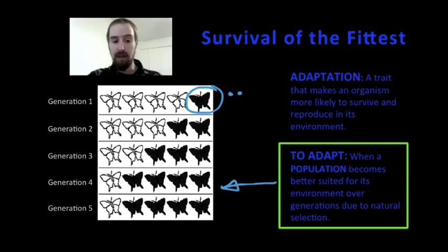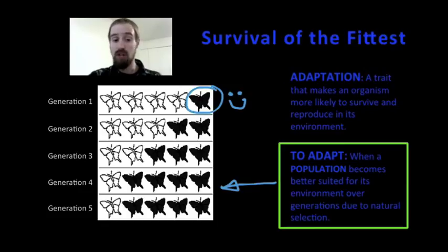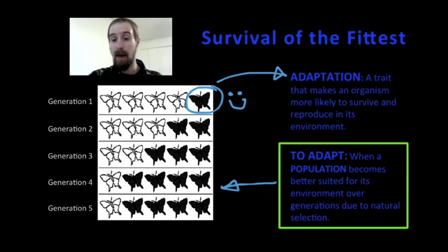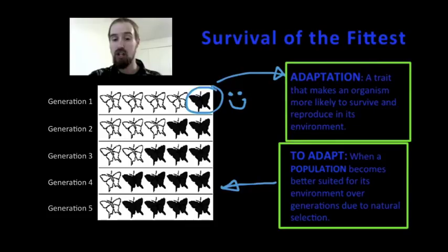They were able to adapt because of variation, and because some moths already had a variation that happened to be helpful in this new environment. The genes for black peppered moths were present in this population long before the Industrial Revolution, and originally it was probably due to a random genetic mutation. It's just that this mutation wasn't very beneficial until the pollution coated the trees and turned them from white to black. In this new environment, we would say that the black coloration is an adaptation, because this trait allowed certain members of this population to survive the changes caused by the Industrial Revolution and to thrive in this new environment.